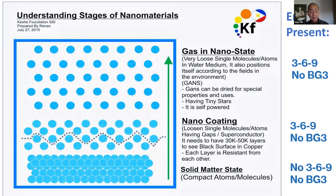Those loosened atoms now coat the surface of the copper. They're still held together, but the individual atoms are loosely spaced. This has the characteristic of being a superconductor layer, because they are spaced and things can flow through it much more easily than through a packed copper wire. That black coating is called nano. Using various techniques — acid, alkali, and water — you can free the material. The nano coating gets freed from the copper wire and goes into the water. That is what's called gas in the nano state: loosely associated atoms in liquid.